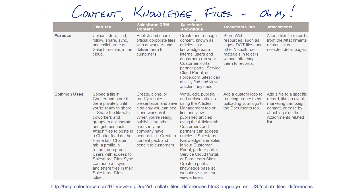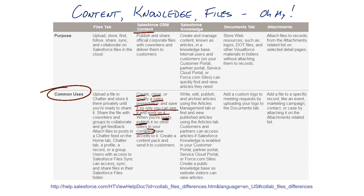Let's come down to common uses and talk about the different ways we can use these features. When we think about content, think about creating, copying, and modifying sales presentations, documents, spreadsheets, or whatever — at first so only you can see it, then you work on it, and when you're ready you publish it so everybody else in your company can use it and collaborate on it. Then when you're ready, you can create a content pack and deliver it to customers.